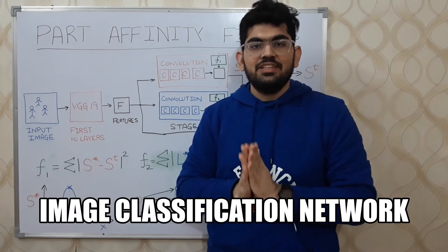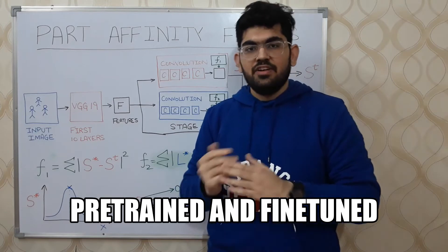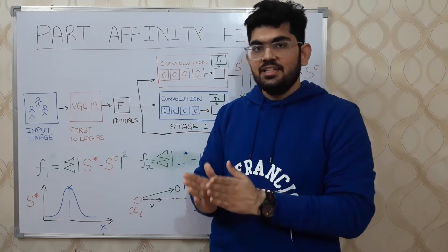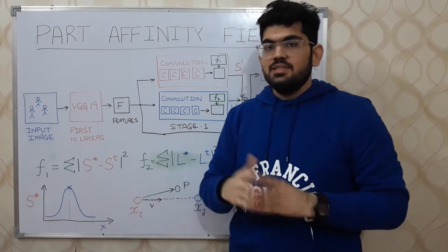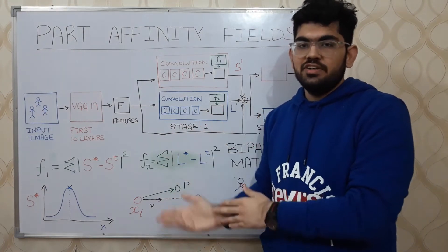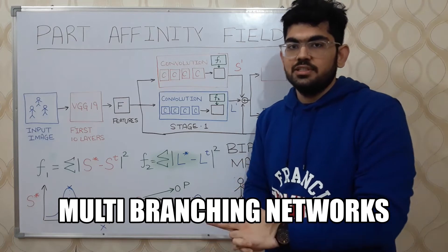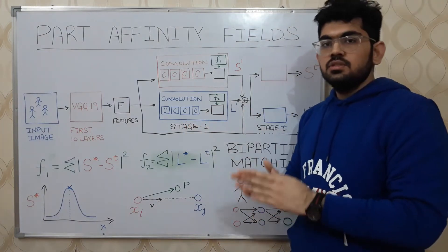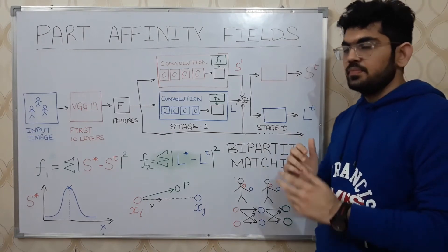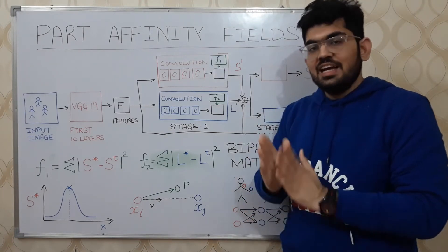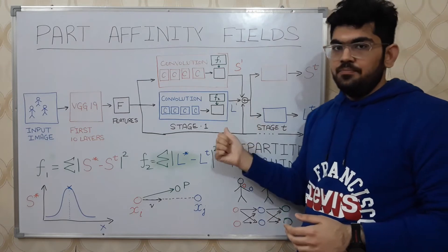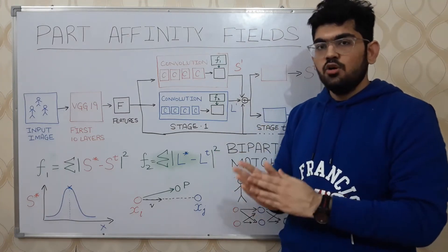VGG-19 is an image classification network that is pre-trained and fine-tuned for this particular task. Through this VGG-19 network, we get a set of feature maps. Then these features are passed through a number of different multi-branching convolution neural networks. After passing through T stages, we get two outputs: ST and LT. The multi-branching convolution network contains two branches which separately predict S and L, each with their own series of convolution maps.